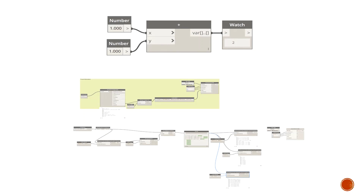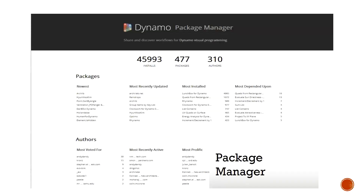This is the simplest form of visual programming — an addition function with two inputs producing a result. As complexity grows, you build a larger graph with more functions and connections. In Dynamo, you have all the built-in functions and can also download additional packages.